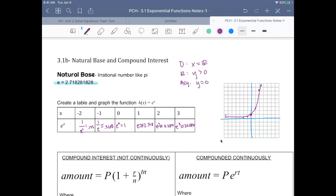Our end behaviors: As x goes to infinity, y is going to infinity. As x goes to negative infinity, y goes to 0. We have a y-intercept at (0,1). All right.